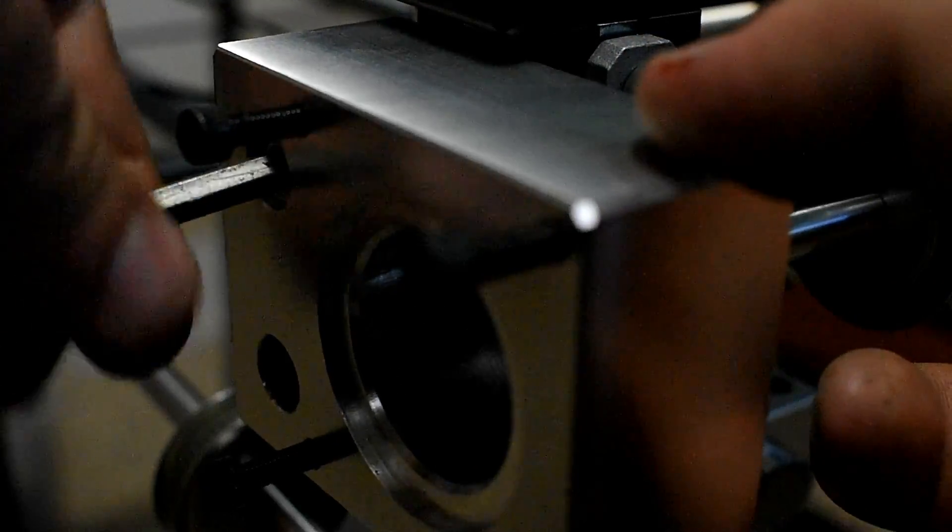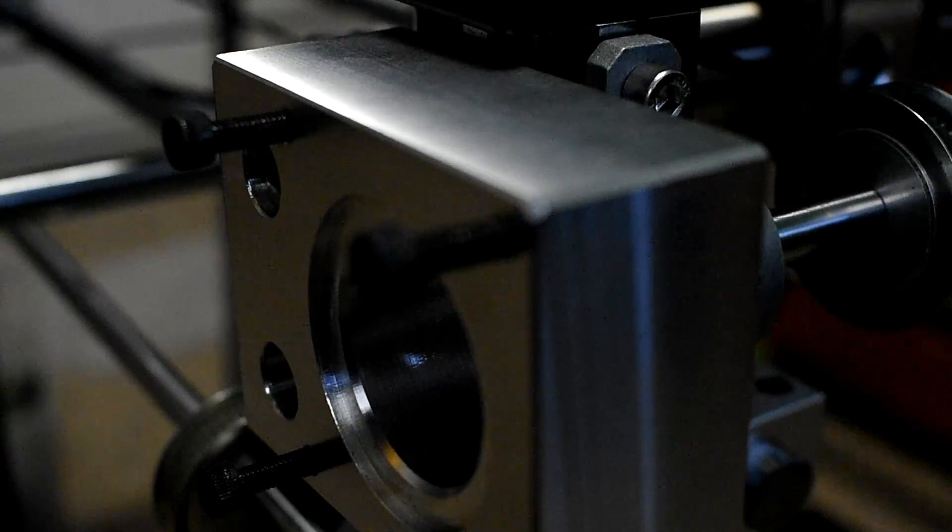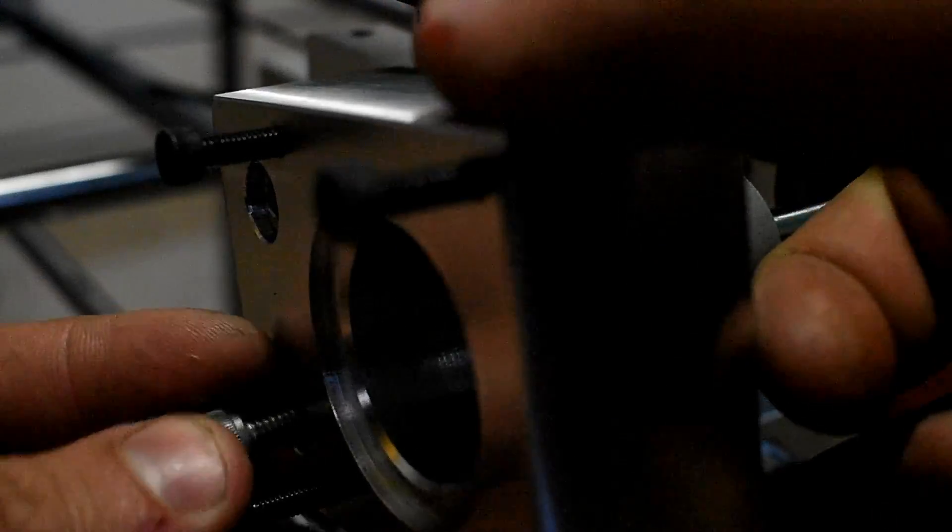The motor bracket attaches to the 30mm extrusion using M6 fasteners with T-slot nuts. This also allows me a little bit of adjustment, which is always good.